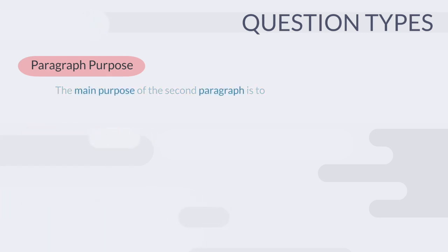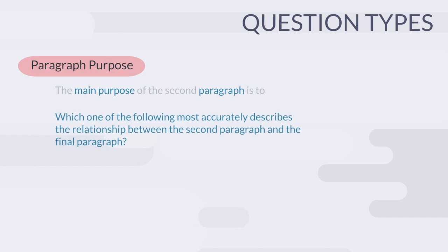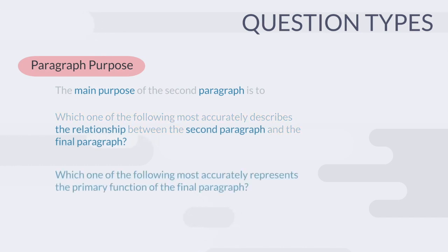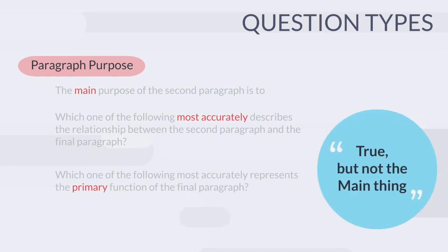Let's get used to some of the question stems. Paragraph purpose will have words like paragraph and purpose, maybe the relationship between paragraphs or the function of a paragraph. Since it's asking us about purpose and function, we know to connect it to the big picture. An answer could be true but wrong because it's not the main thing.